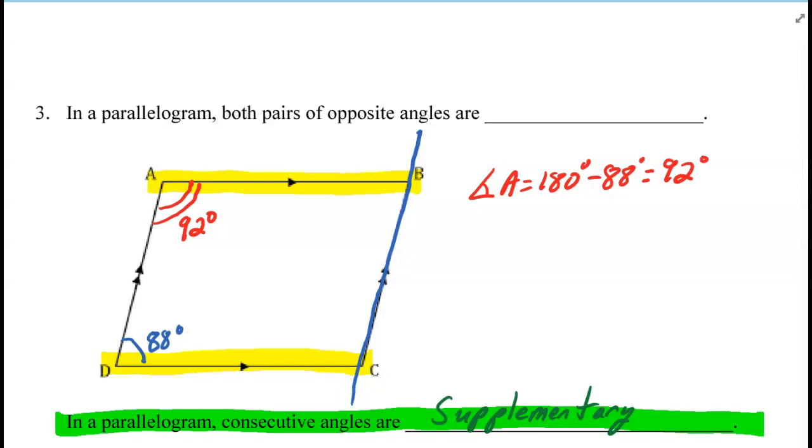and I were to mark this angle here in green, angle B is equal to 180 degrees minus 92, because they are supplementary, which is 88 degrees. So angle B is 88 degrees.